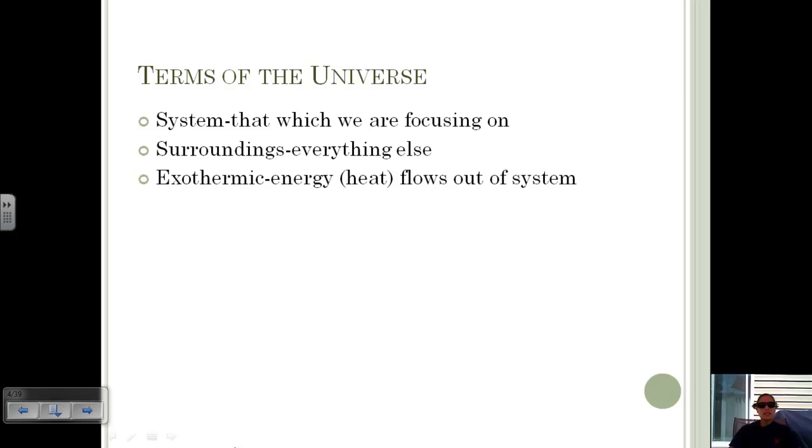If the system is exothermic, that means that energy as heat flows out of the system. We would usually say that this is negative. If heat flows into the system, we would say that's endothermic.